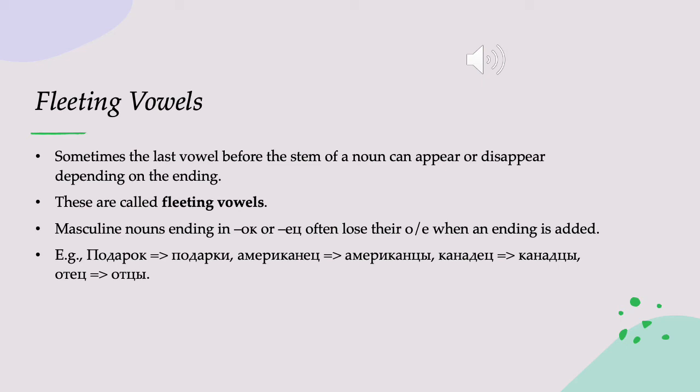We're going to find fleeting vowels in the nominative plural with masculine nouns. For example, podarok, a present, becomes podarki — we drop the О before the К when we add an ending. Amerikanets, an American man, becomes amerikantsy, American men — we drop the Е before the Ц when we add an ending. Kanadets, a Canadian man, becomes kanadtsy, Canadian men. Otets, a father, becomes ottsy, fathers.